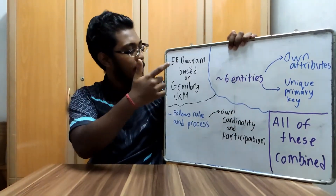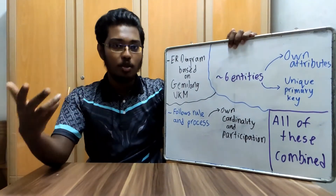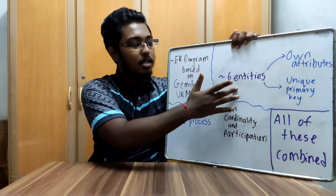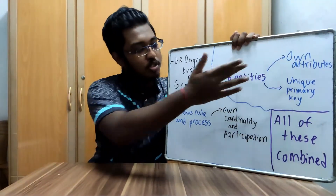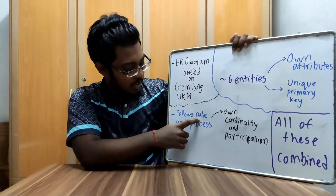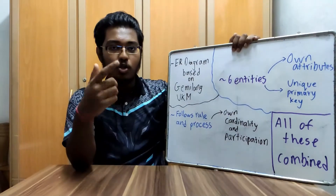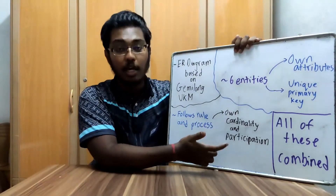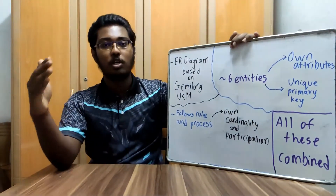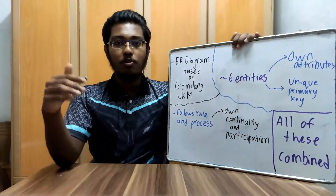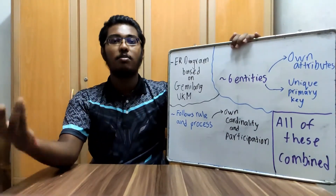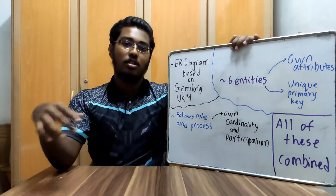In conclusion, the ER diagram we created is based on the GAMILAC UKM system, which is the main book loan system of UKM. The system has six entities where each entity has its own attributes and a unique primary key. The relationships between entities follow specific rules and processes, with their own cardinality and participation. All of these combined create a smooth and functional workflow for the GAMILAC UKM system. We sincerely hope that users who use our ER diagram to learn more about the GAMILAC UKM system gain benefits from it. Thank you.